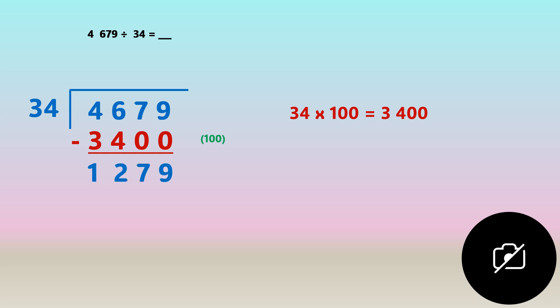We add all the green numbers. When we subtract, we get an answer of one thousand two hundred and seventy nine. Now we're going to solve again and divide again.